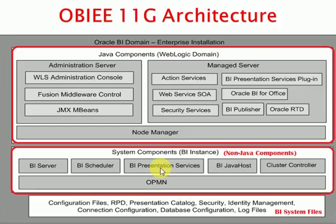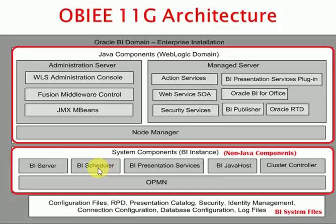Talking about system components — the BI system components, which are non-Java components on the OBIEE side — there are five services: BI Server, BI Scheduler, Presentation Services, Java Host, and Cluster Controller. The BI Server is the heart of your OBIEE; it reads your RPD, the repository file you create using the Administration Tool. BI Scheduler is a separate service used to schedule reports and deliver them through email to particular users.